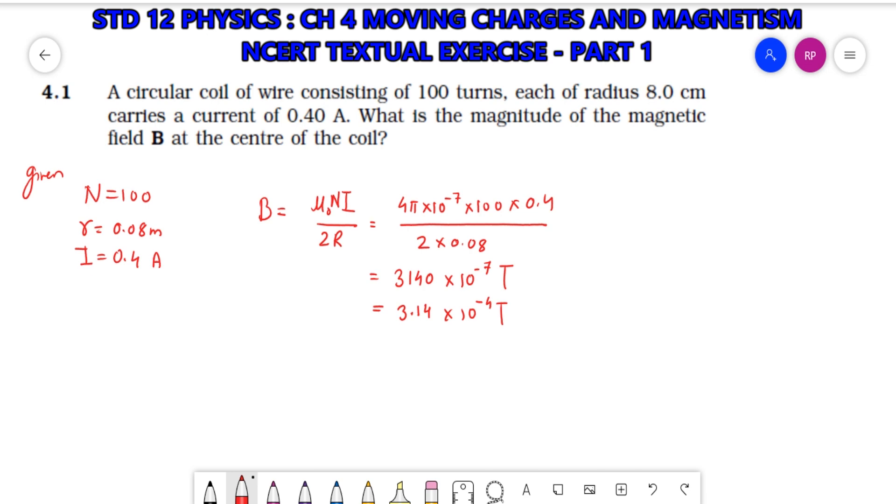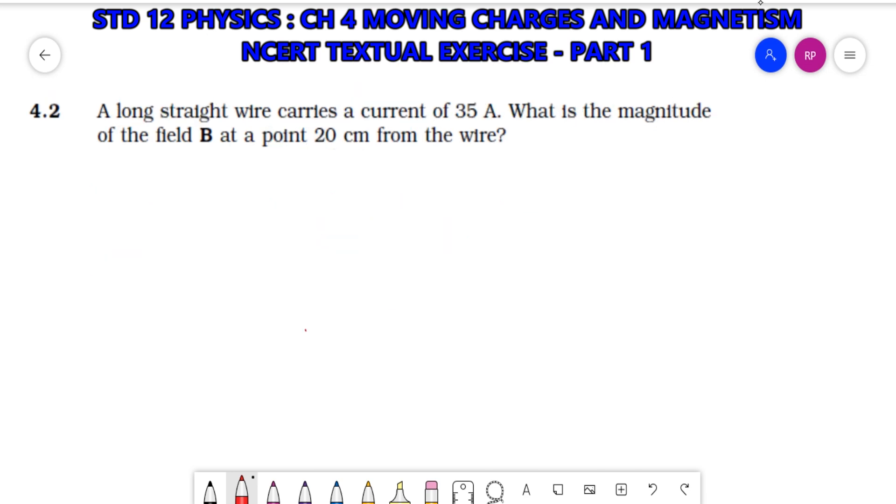Now let's move to the next question 4.2: A long straight wire carries a current of 35 amperes. What is the magnitude of the field B at 20 centimeters from the wire? So current equals 35 amperes, distance r equals 0.2 meters.